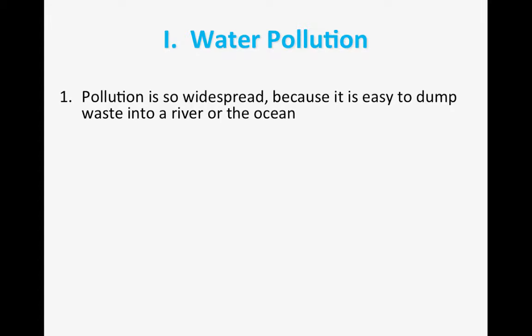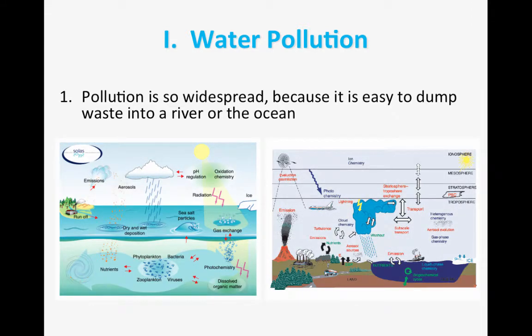As we noted in the last lecture, there are different kinds of pollution. Let's take a look at water pollution first. The reason water pollution is such a big problem is because it's widespread, and the reason it's widespread is because it is very easy to be very direct in your pollution — you just dump something in the ocean. It is very easy to dump waste into a river or the ocean and completely ruin things, which is also why it's kind of hard to contain.